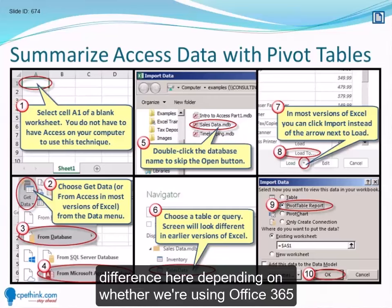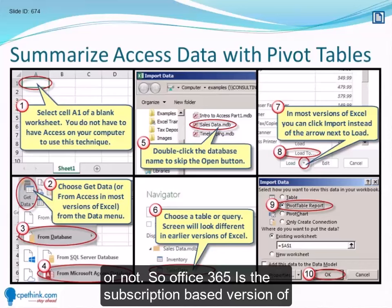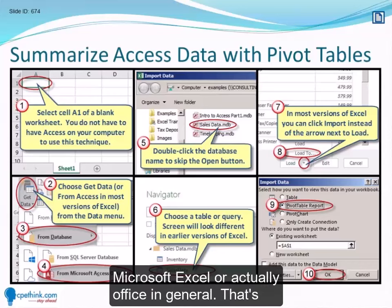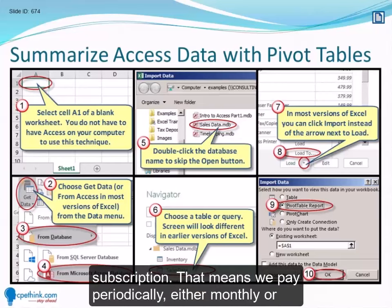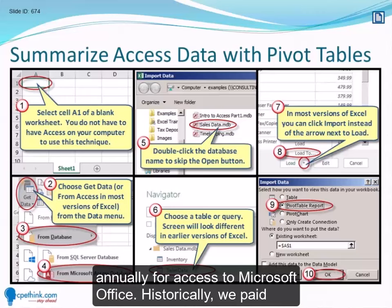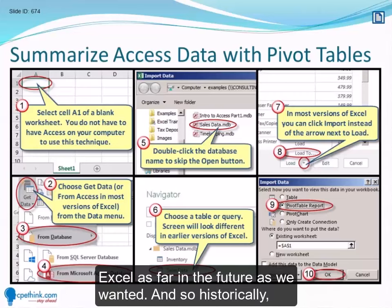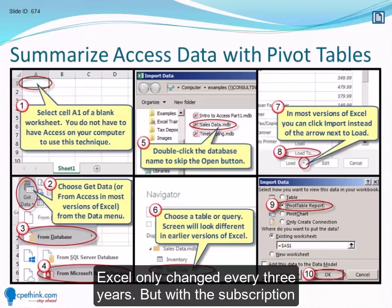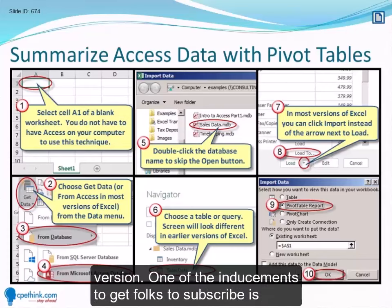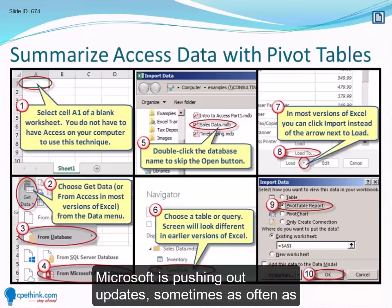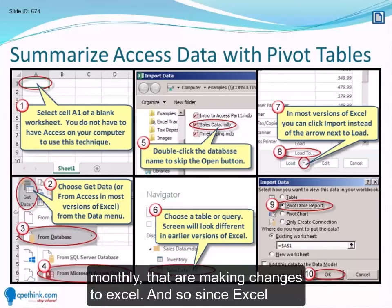There is going to be a difference here depending on whether we're using Office 365 or not. Office 365 is the subscription-based version of Microsoft Office — by subscription, we pay periodically either monthly or annually for access. Historically we paid once for a perpetual license and could use that version of Excel as far into the future as we wanted, and Excel only changed every three years. But with the subscription version, one of the inducements to subscribe is that Microsoft pushes out updates sometimes as often as monthly.